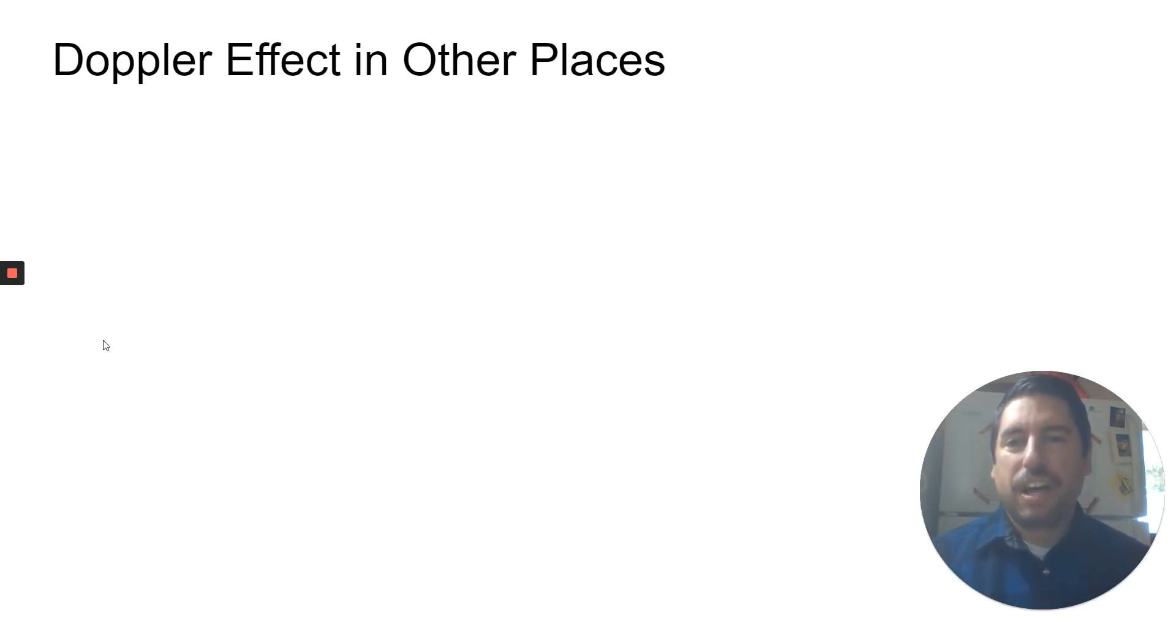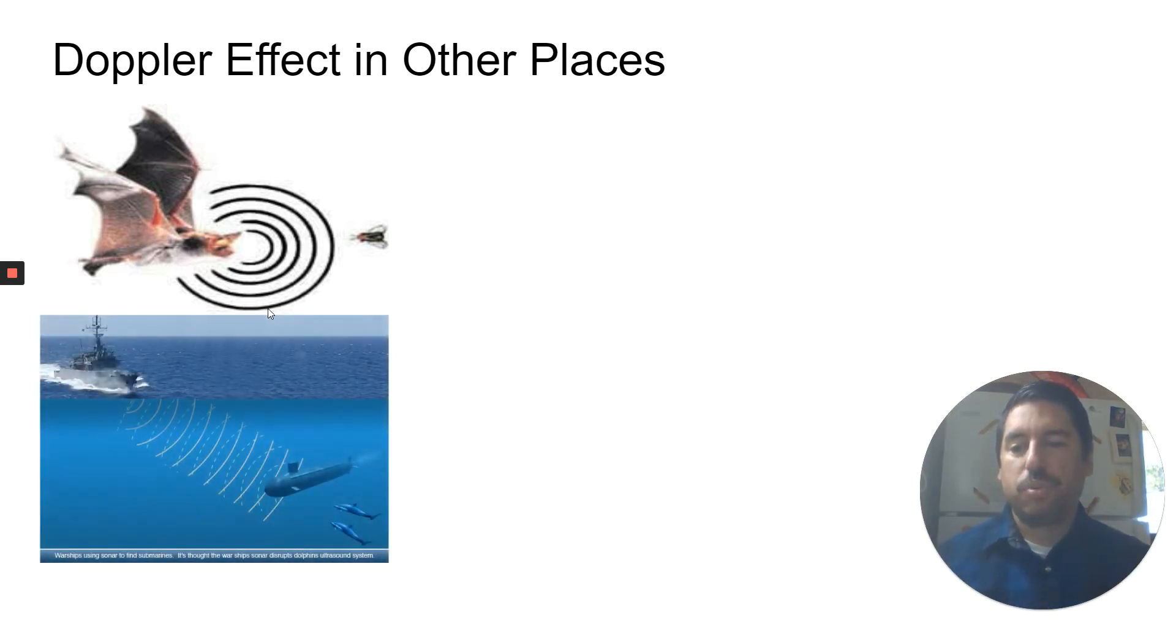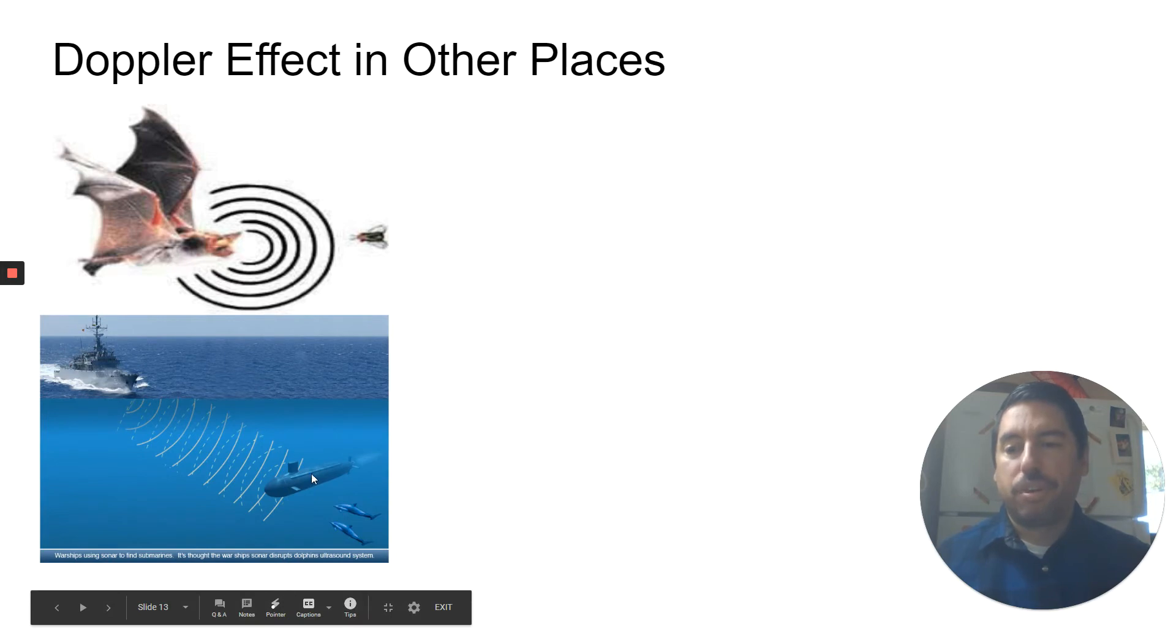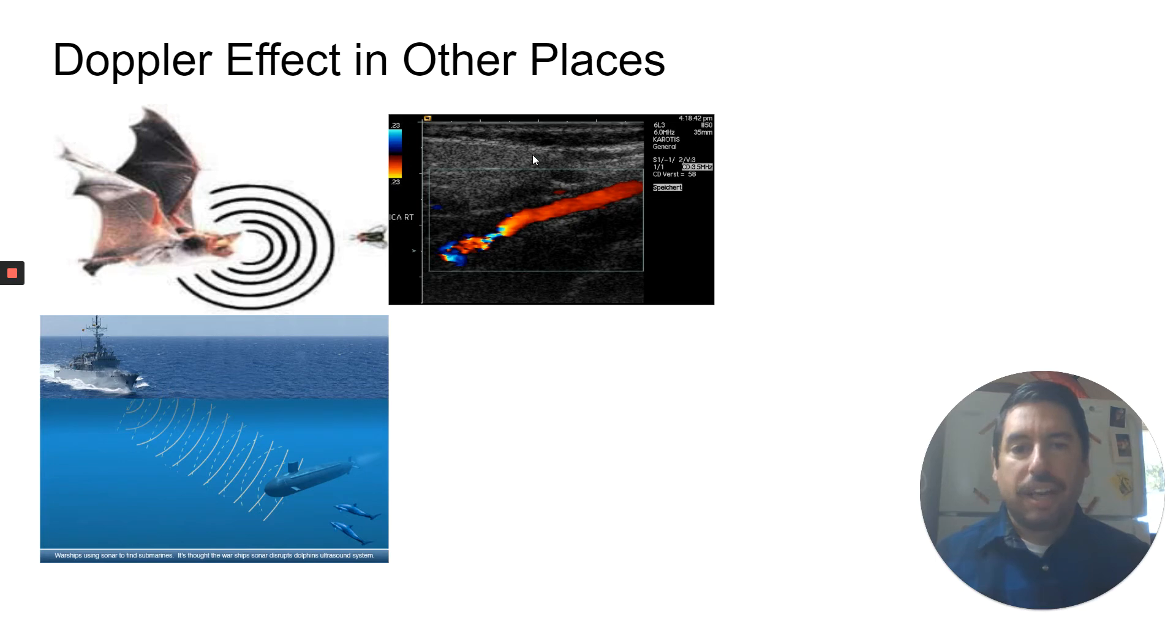And we do see the Doppler effect in other places. Bats use echolocation. And so if the insect is flying towards the bat, the frequency of the bat's echolocation is going to change because the bug is coming towards it. The waves are bouncing, and it can actually detect those changes.